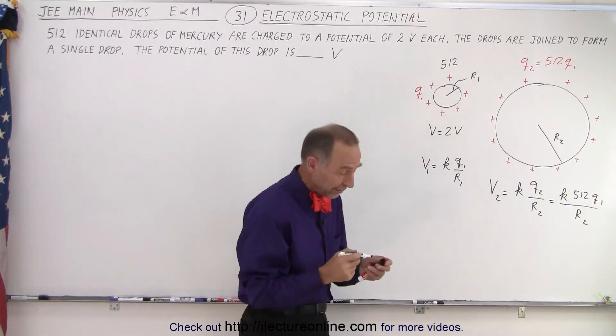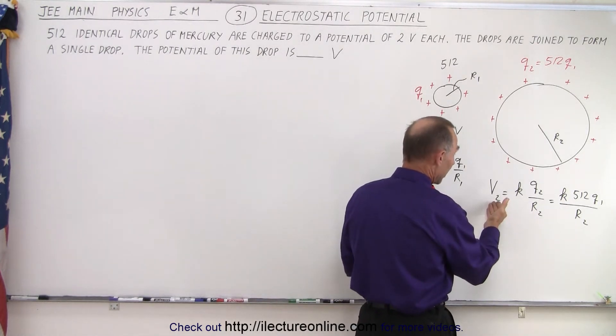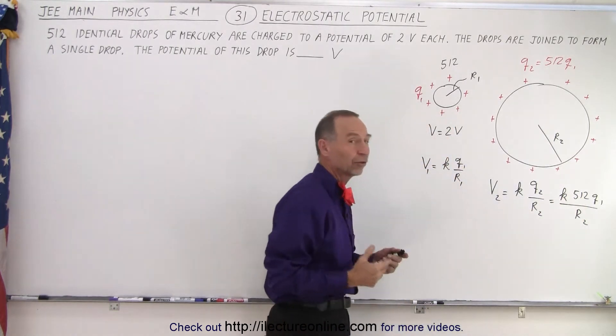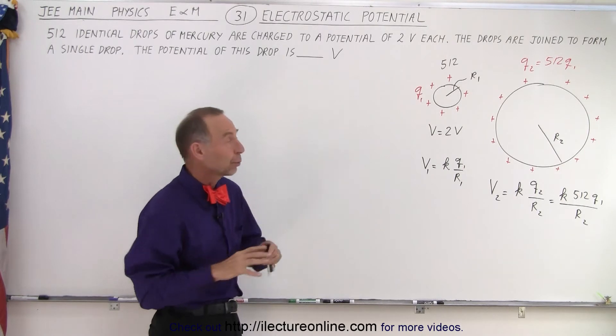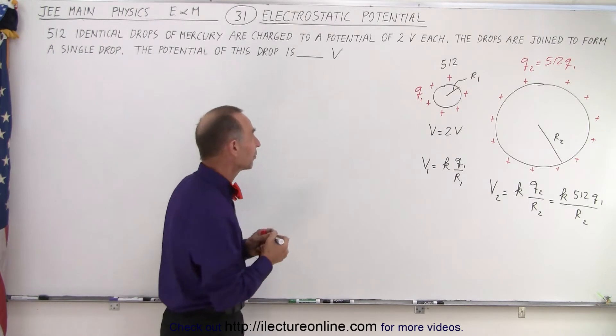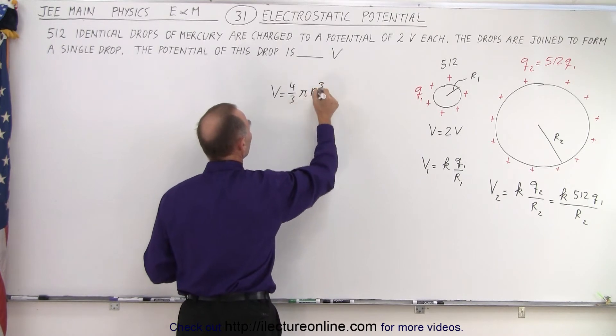So that means that if the radii were the same, the voltage on the big sphere would be 512 times the voltage on the small sphere. Of course, the radii are not the same. So we now have to figure out what would be the radius of that large sphere. So now we're dealing with the volume of a sphere. We know that the volume is equal to 4 thirds pi R cubed.